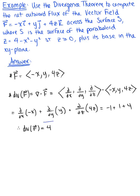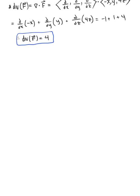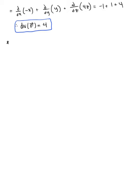Now that we have the divergence of our vector field, we want to think about the solid region D and the surface that bounds this region. Our surface S is the surface of the paraboloid z equals 4 minus x squared minus y squared, where z is greater than or equal to 0, plus its base in the xy plane. We don't have a simple geometric formula for this solid region, but we can easily find the bounds by sketching the region.